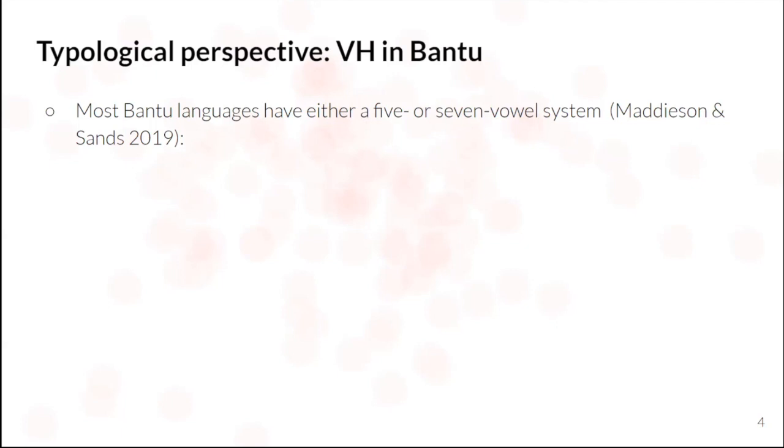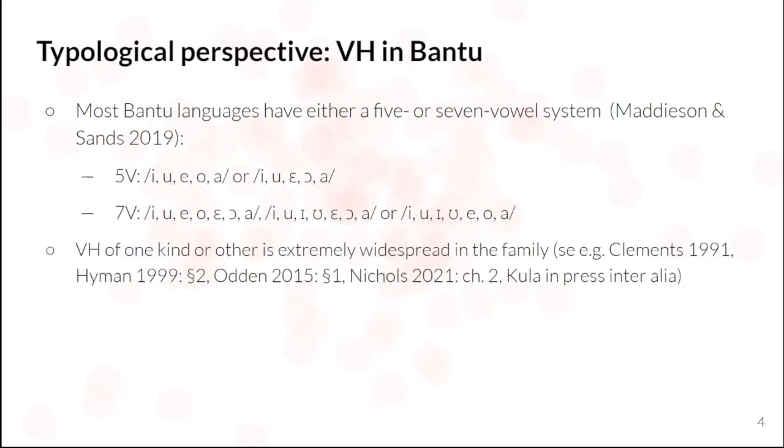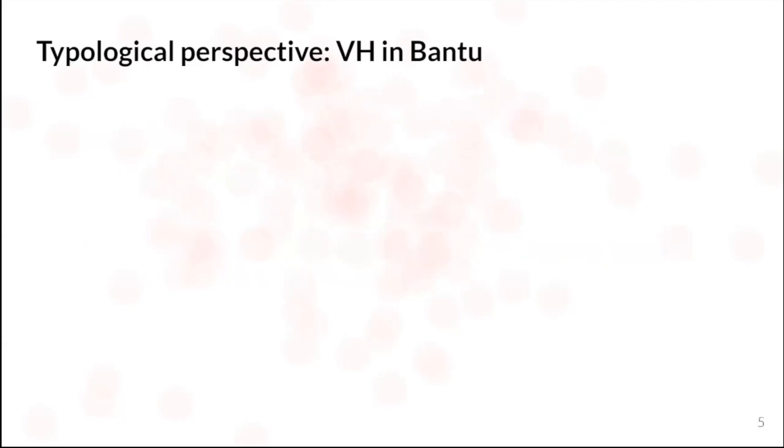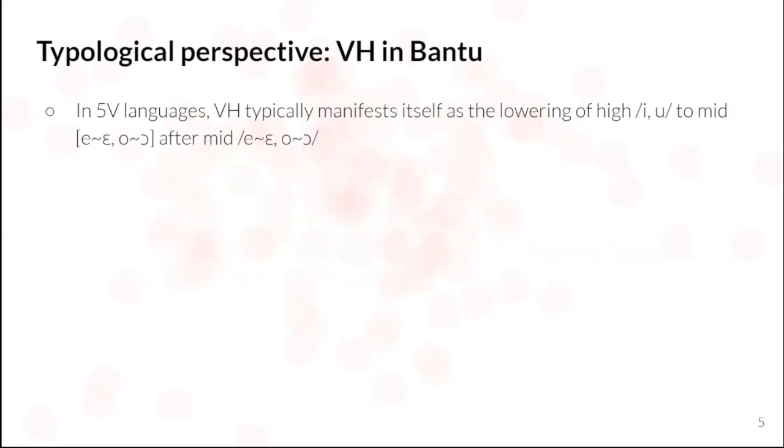So most Bantu languages have either a five or a seven vowel system. So it will be typically one of these if you're a five vowel language or one of these if you're a seven vowel language. And vowel harmony of one sort or another is extremely widespread within the family at large. And in five vowel languages, this typically manifests itself as the lowering of high vowels to mid after mid vowels. So this is what we get in, for example, Bemba or Swahili.